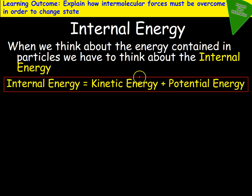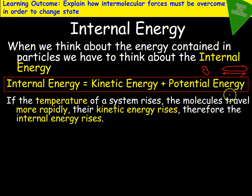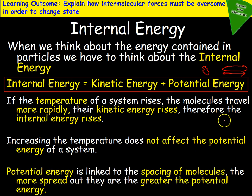Internal energy is the kinetic energy of particles and the potential energy. Potential energy is how much energy the particles have because of how they're spread out — like an elastic band: it doesn't have much energy at rest, but stretched it has a lot more energy. If the temperature of a system rises, molecules travel more rapidly — their kinetic energy increases, therefore increasing internal energy. Increasing the temperature doesn't affect potential energy because that's only to do with the spacing of the molecules. The more spread out they are, the greater the potential energy.